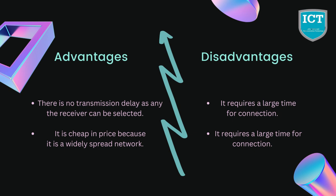Now let us talk about some advantages and disadvantages of telephone networks. The telephone network is a circuit-switched network, which is a type of network configuration in which a physical path is obtained and dedicated to a signal connecting two endpoints. For the duration of a dedicated connection, ordinary voice phone services use circuit switching. There is no transmission delay as any receiver can be selected, and it is cheap in price because it is a widely spread network.